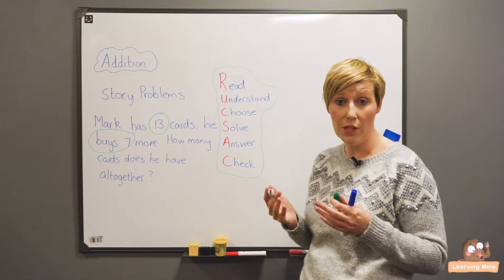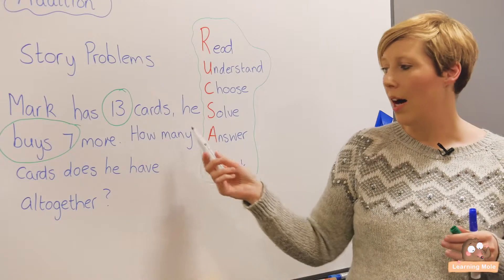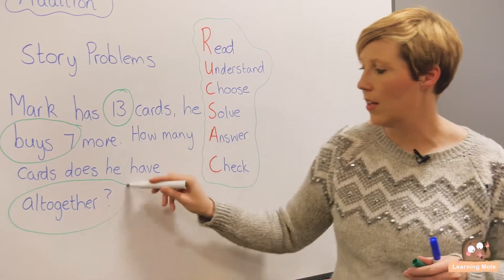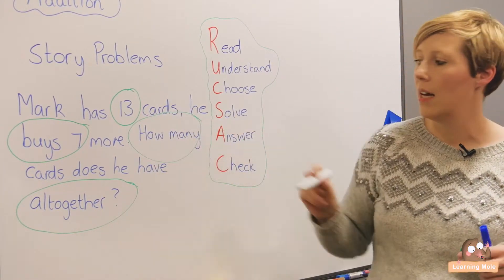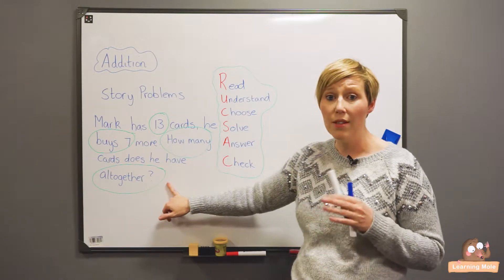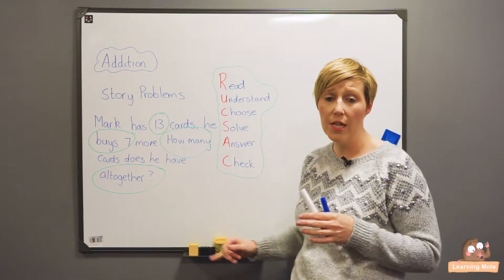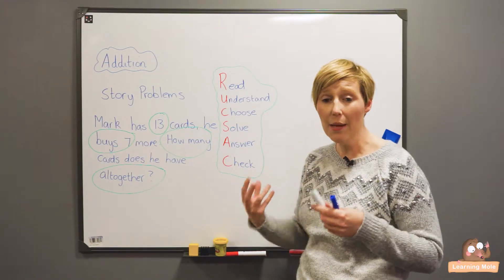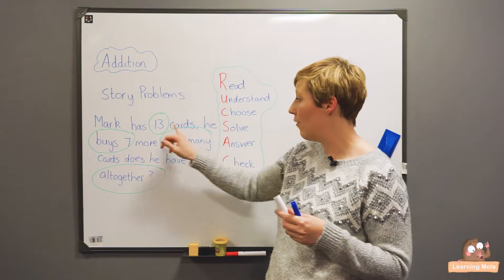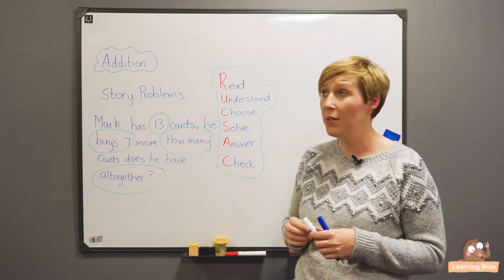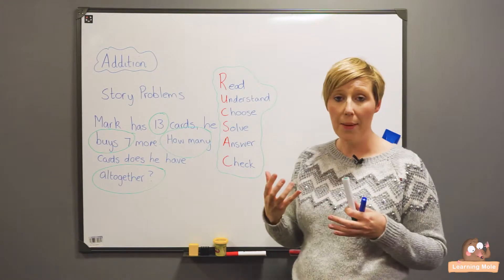He buys seven more so again that's important and I'm actually going to ring buy as well because buy sometimes can have an effect on what we're doing in our problem. How many cards does he have altogether? Again, I'm going to ring the altogether and the how many because this is telling me immediately altogether. I know generally altogether is a word that is usually related to multiplication or addition so already I'm starting to get some clues and I've also highlighted my key numbers in there as well. So I'm starting to understand what I need to do.